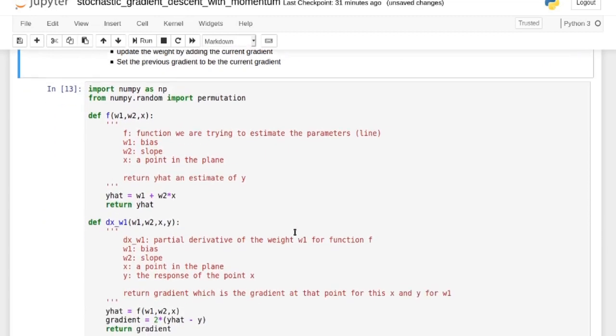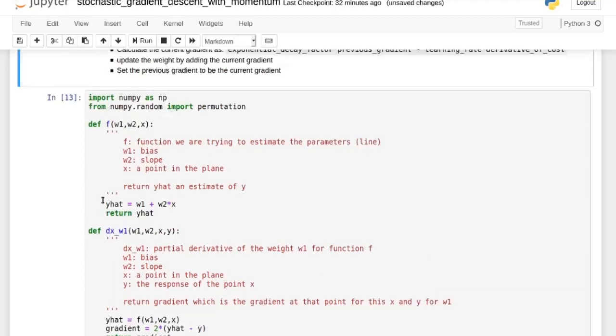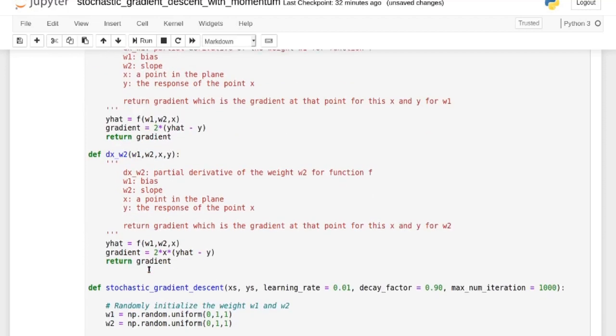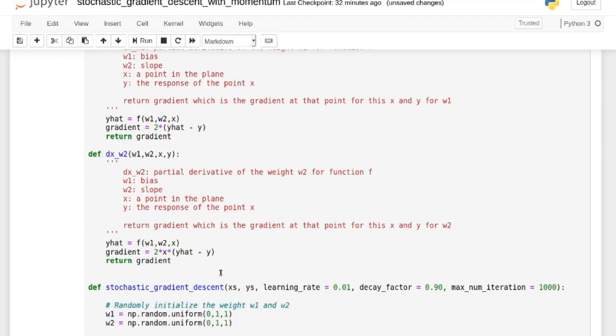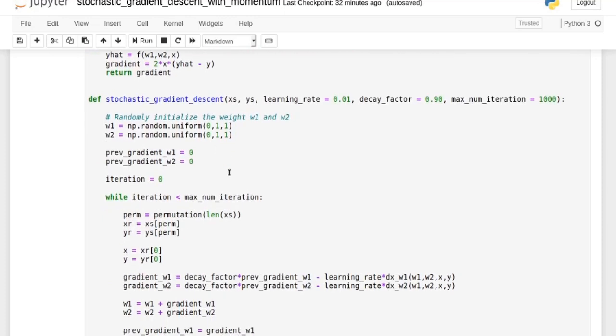So if we look at an implementation here, this is the function we're going to look at. We're just going to look at the linear function. So we have here the bias and here we have the slope times x. And that will return our estimate. Here, this is derivative of w1. This is the derivative of w2. So this is the slope. So if you looked at my previous video about stochastic gradient descent, it's basically the same thing, except that we have the decay factor over here.